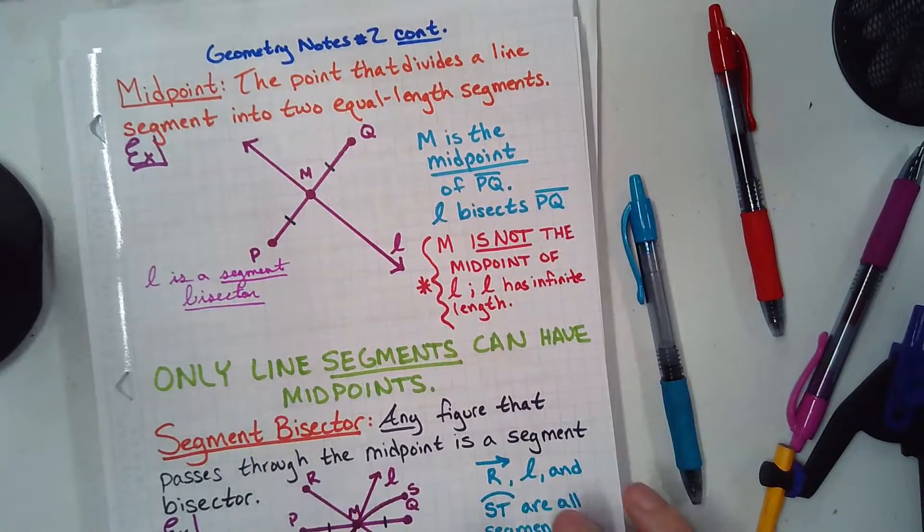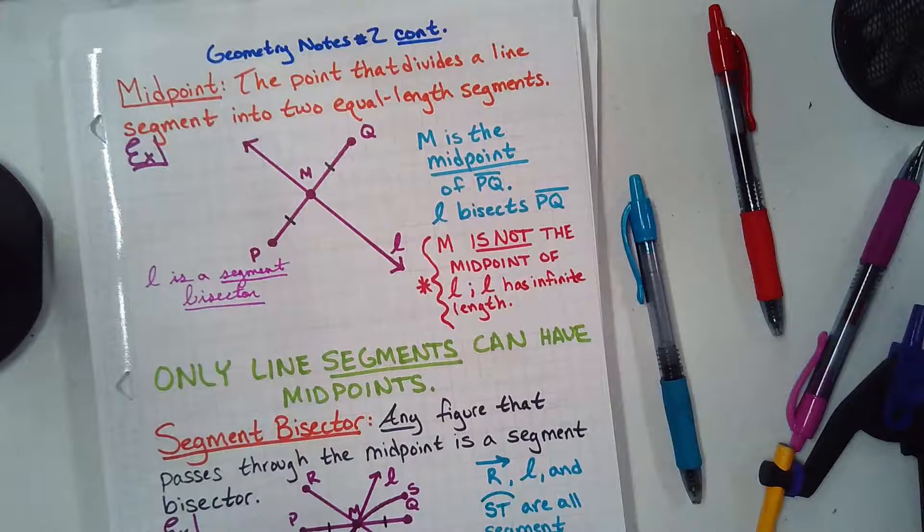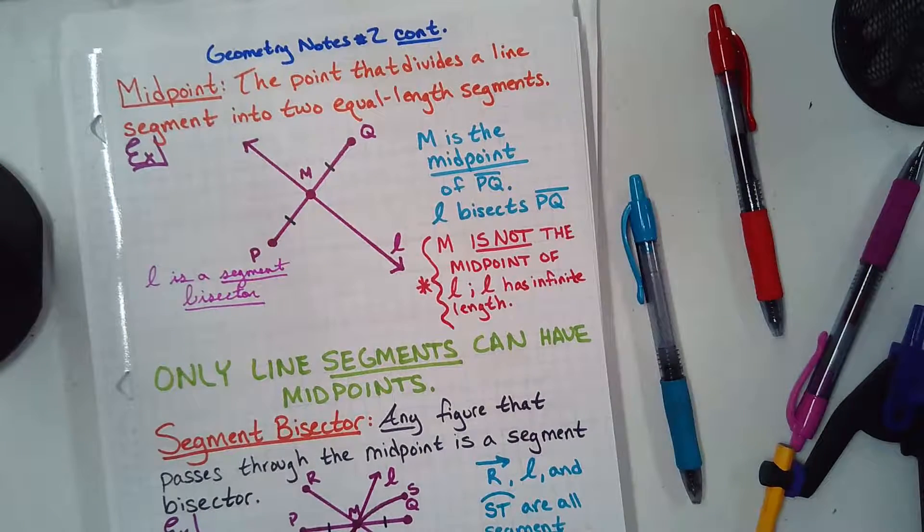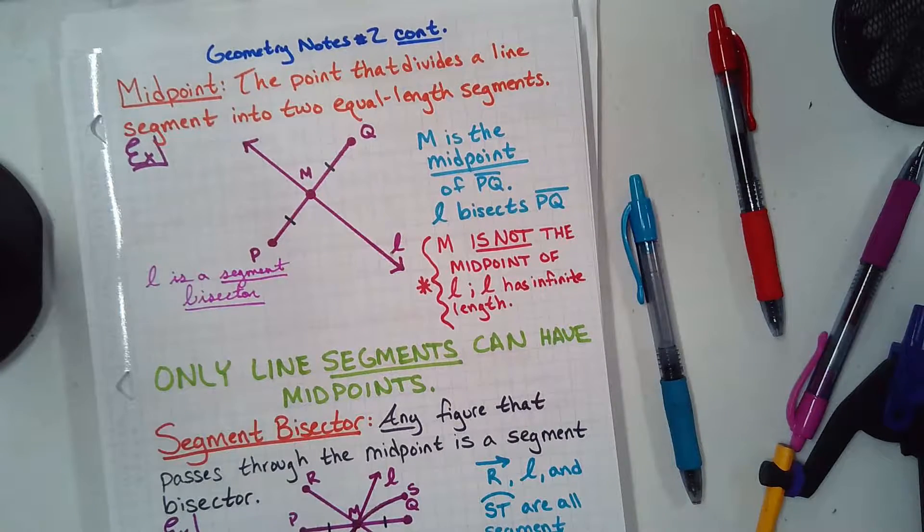M is not the midpoint of line L. Why can't lines have midpoints? Because they don't stop. Infinite length. Lines don't stop. They keep going. Infinite length.